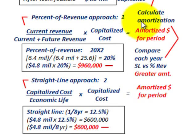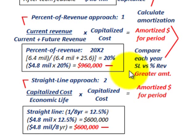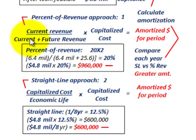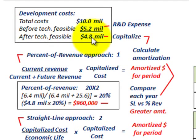We have to calculate the amortization each year for this software using two methods: the percent of revenue approach and the straight-line approach. We have to calculate amortization using both of these approaches, and then we're going to take the greater amount between the two. For the percent of revenue approach, we take the current revenue divided by the total revenue — current amount plus any future revenues — then multiply that percentage by the capitalized cost of $4,800,000 to get our amortization for the period.